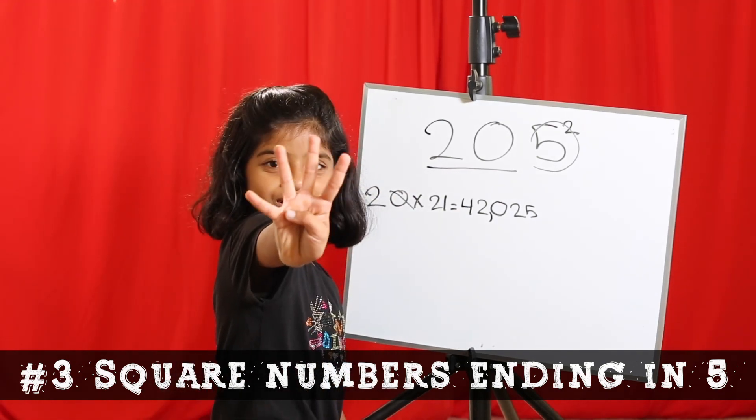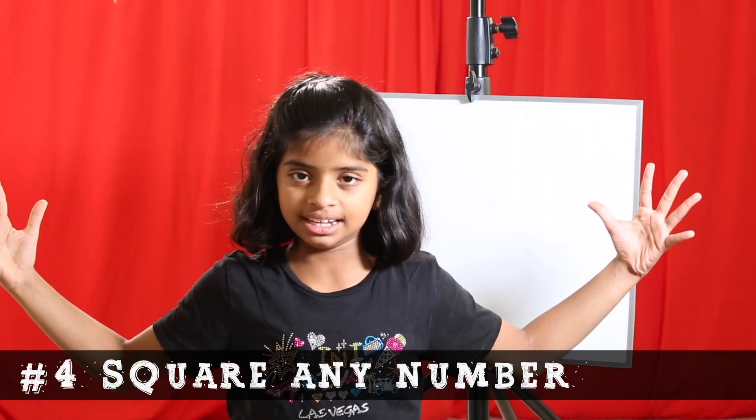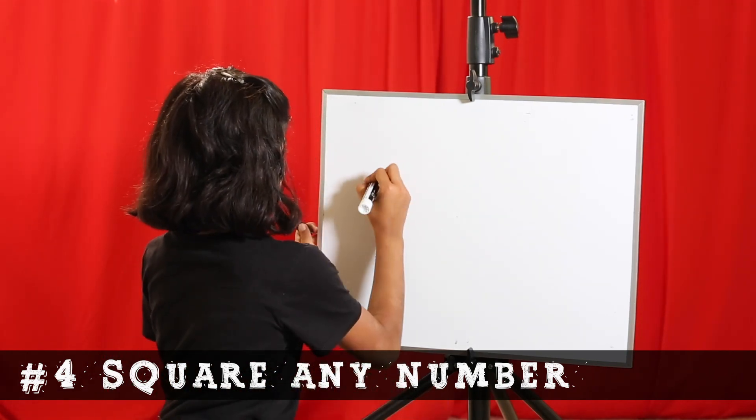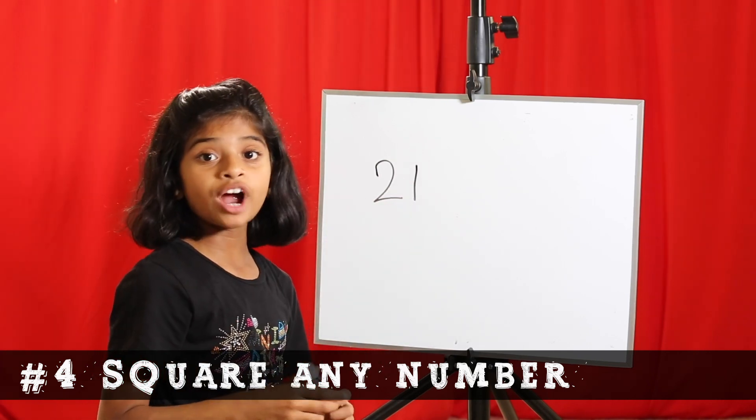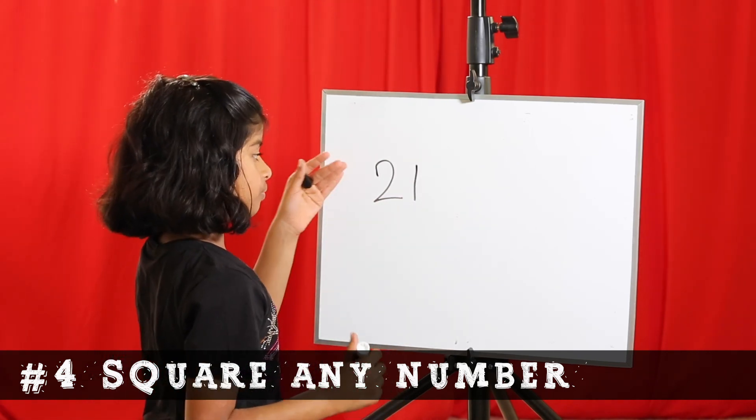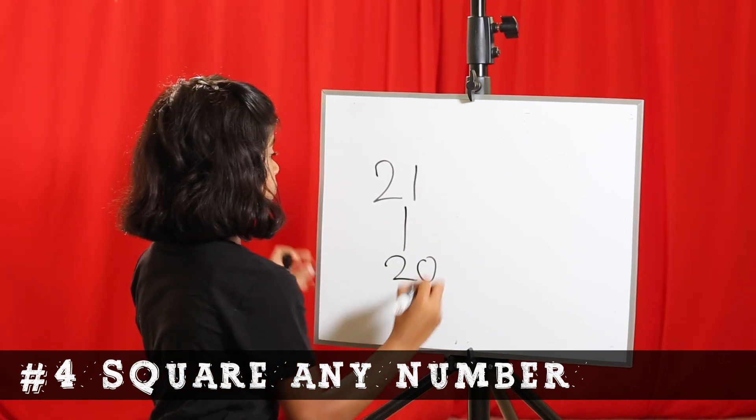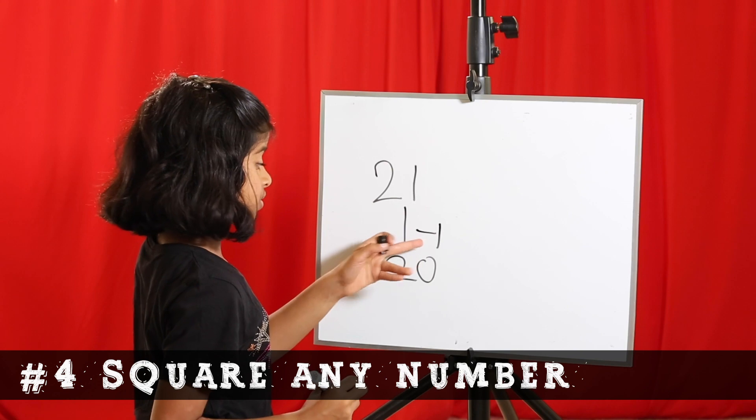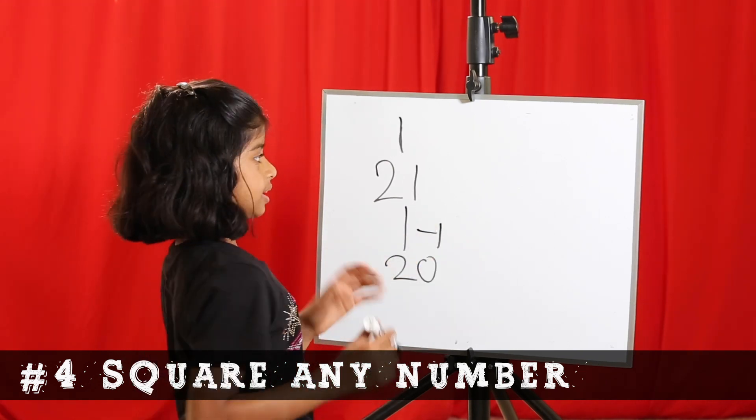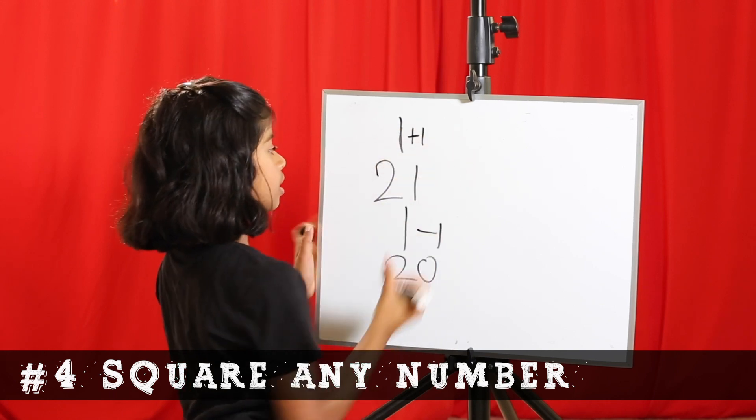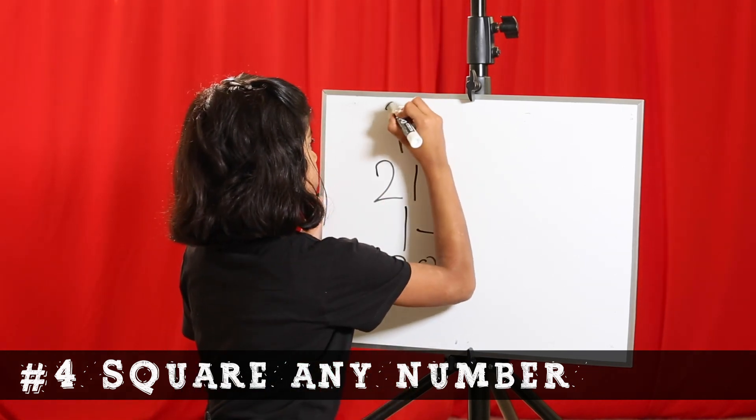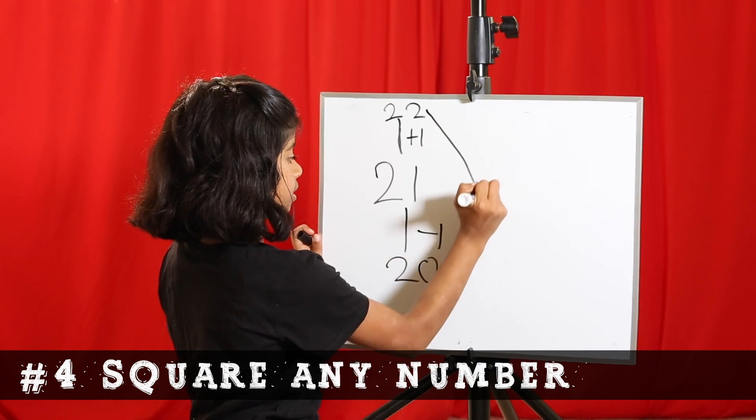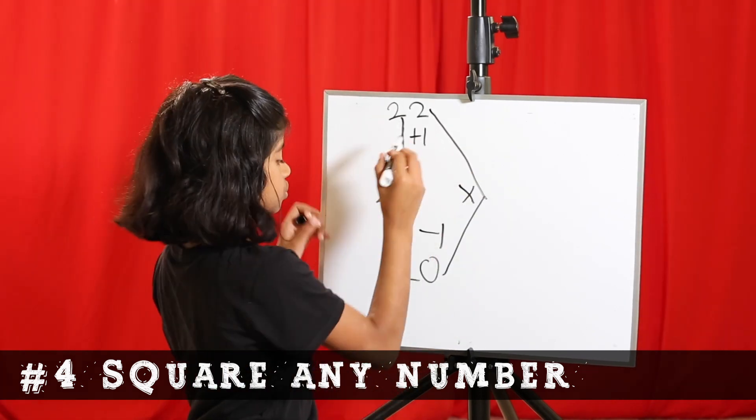On to trick number 4. Let's extend this idea so we can square any number in the world. So let's square 21. First we need to find the nearest 10. The nearest 10 to 21 is 20. And between 21 and 20, there's a difference of minus 1, which, 21 minus 1 equals 20. Since we subtracted 1 here, we're going to add the 1 here to get another number. Now, 21 plus 1 is 22. Now we need to take and multiply them, 22 times 20.